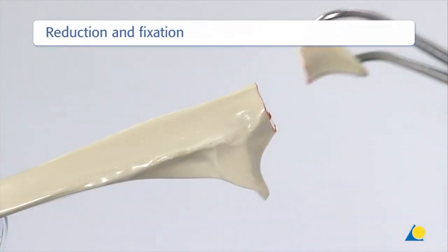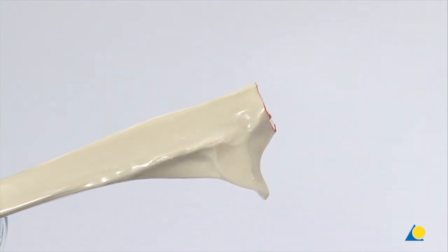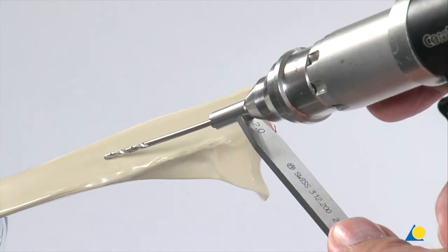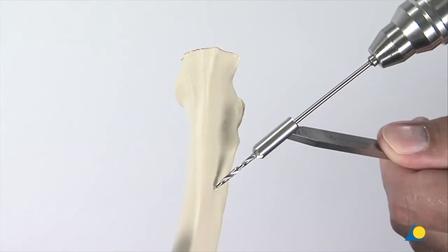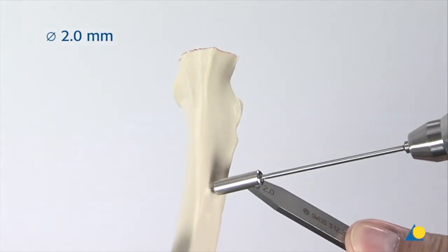The bone model has a transverse fracture of the olecranon. Approximately 4cm distal to the fracture line, a hole is drilled transversely through the ulna with the 2mm drill bit using a drill guide. The hole is positioned roughly in the center of the bone.